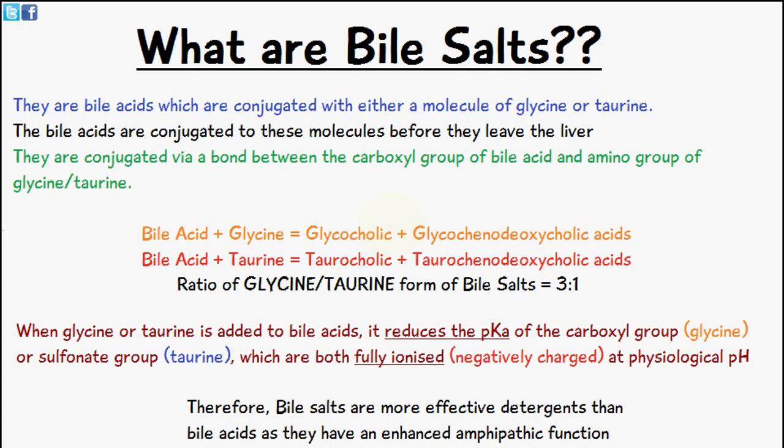Basically, bile salts are bile acids which are conjugated or joined with either a molecule of glycine or taurine. The bile acids are conjugated to these molecules before they leave the liver. They are conjugated via a bond between the carboxyl group of the bile acid and an amino group of glycine and taurine. Glycine and taurine are both amino acids and they possess an amino group, and this is where the bond forms.